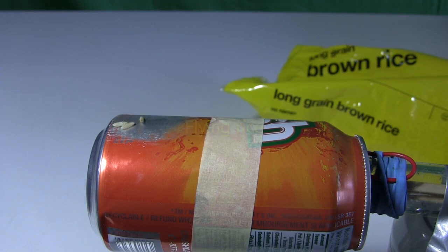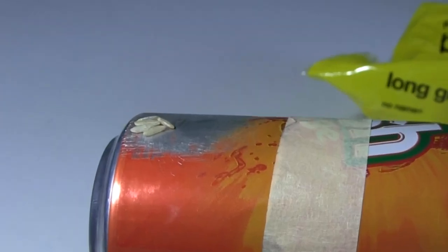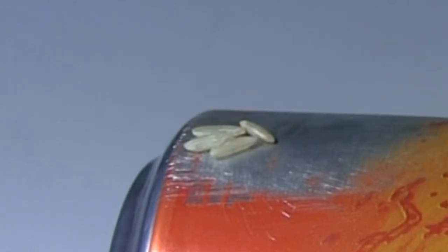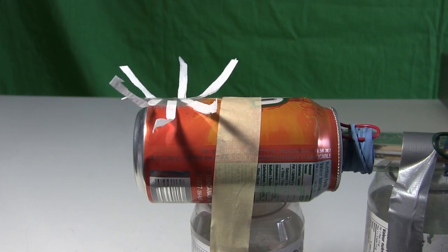Here grains of rice become charged and are repelled off. That's because they become charged with the same charge as the can and as each other. And once again since like charges repel they repel from the can and each other. And here strips of toilet paper rise up.